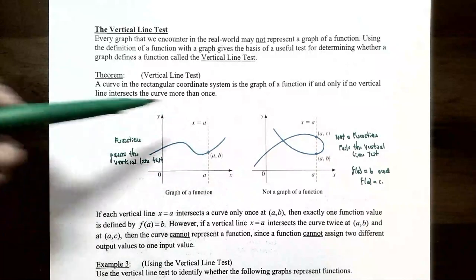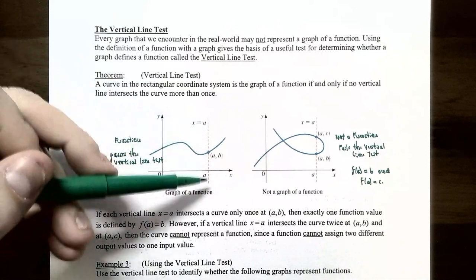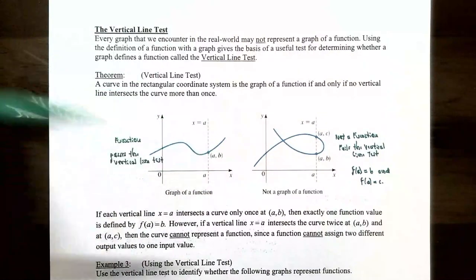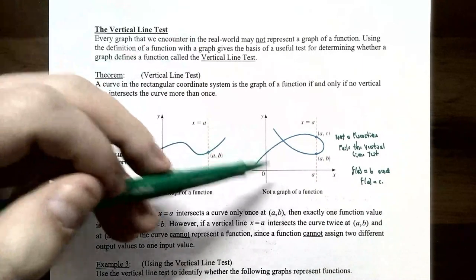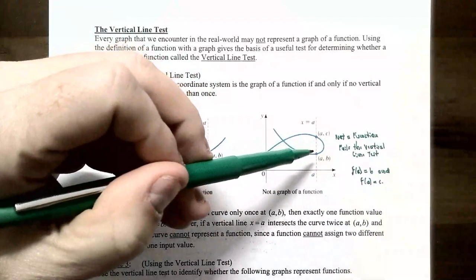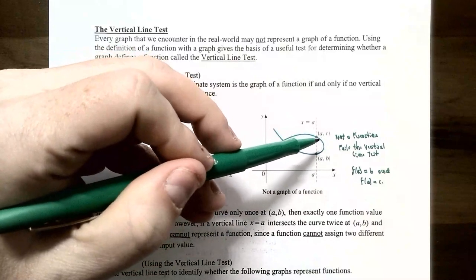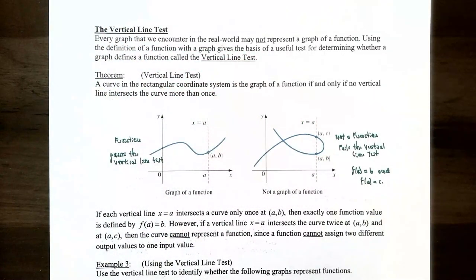A graph that passes the vertical line test: any vertical line drawn at x = a intersects the curve exactly once, so each x value corresponds to exactly one y value — this is a function. A graph that fails: a vertical line at x = a intersects the graph at two points, y = b and y = c. Since one x value corresponds to two y values, this violates the definition of a function.